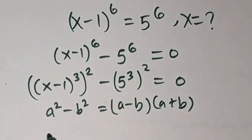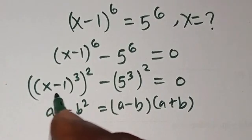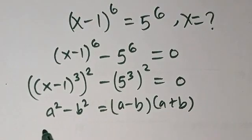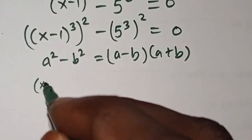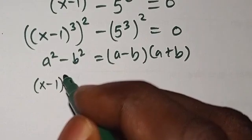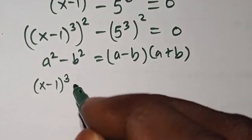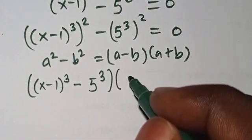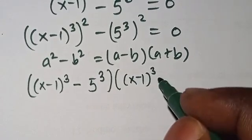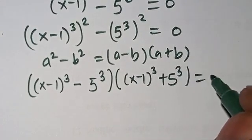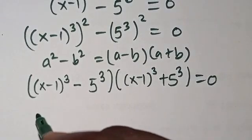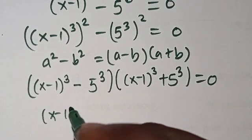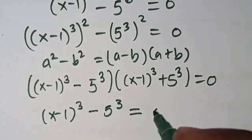So now from here we're going to apply this. We're not going to translate this. So x minus 1 to the power of 3 will be a, and 5 to the power of 3 will be b. So we're going to have x minus 1 to the power of 3 minus 5 to the power of 3, then x minus 1 to the power of 3 plus 5 to the power of 3 equals 0. So we have this zero-product form equation — either x minus 1 to the power of 3 minus 5 to the power of 3 equals 0.